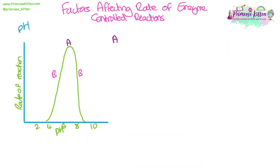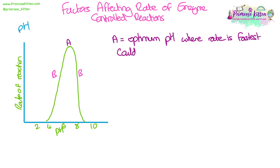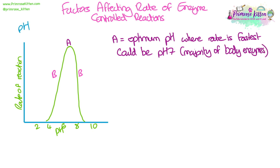Now let's look at pH. This graph is a little different, although it's still a curved shape. At point A, we have the optimum pH — this is where the rate is fastest and it's the peak of the graph. Bear in mind that this could be pH 7, which is the usual pH for most body enzymes, but it could also be lower than that — it could be pH 2, especially if we're talking about enzymes like pepsin, which are adapted to work in the stomach where there is hydrochloric acid. So their optimum pH is obviously much lower.